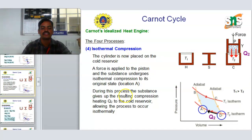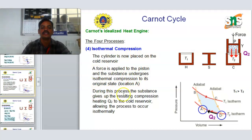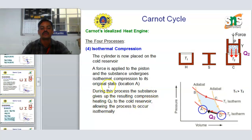The fourth process is isothermal compression. The cylinder is now placed on the cold reservoir. A force is applied to the piston and the substance undergoes isothermal compression back to its original state. During this process, the substance gives up heat Q2 to the cold reservoir, allowing the process to occur isothermally.